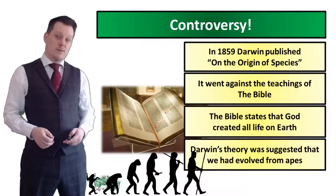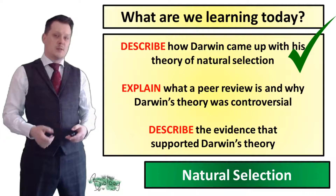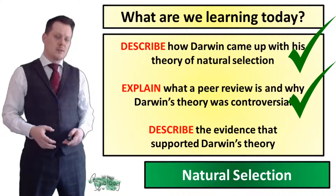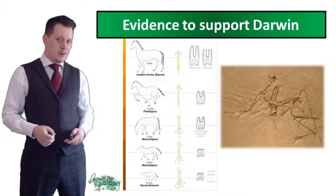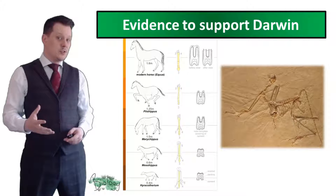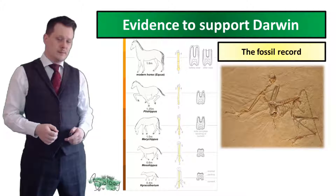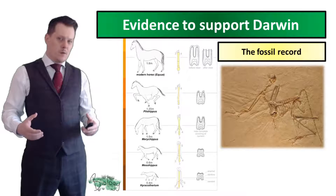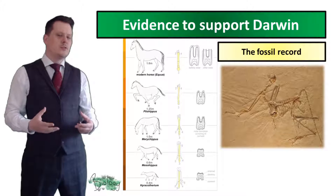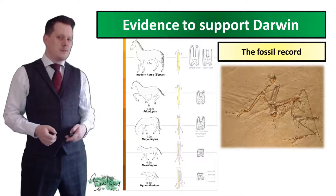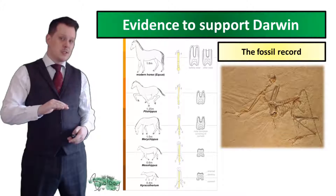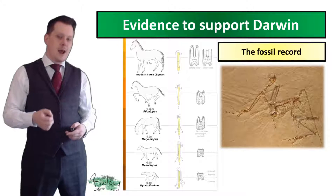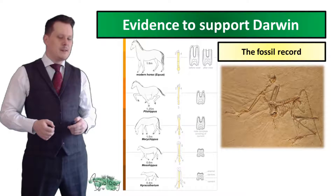Now we can explain what peer review is and why Darwin's theory was so controversial. Next, we'll describe some of the evidence that supported Darwin's theory, such as the fossil record, which shows all the living creatures that lived in a place over a really long period of time. Over hundreds of thousands of years of fossils deposited in the earth, you can see the gradual change in species and the animals that lived in that habitat.